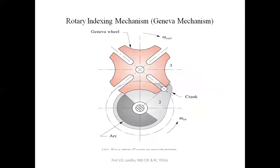Next is the rotary index mechanism — the Geneva mechanism. In this mechanism, the input is given to the crank and the output is taken from the Geneva wheel. There is one pin provided here, called the crank pin, which has an angular velocity omega. This omega is the input angular velocity for the crank, which moves in an anti-clockwise sense, causing the Geneva wheel to move in a clockwise sense. The Geneva mechanism is like a cam which provides intermediate rotary motion — there is no continuous rotary motion; the motion is intermittent as the pin inserts into the slot.